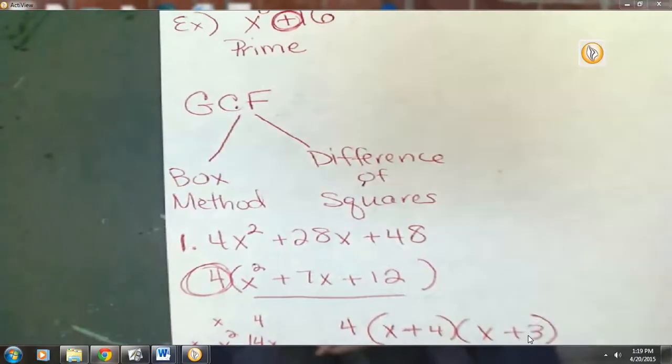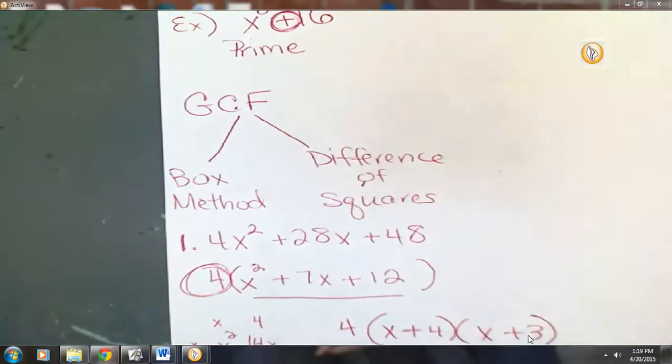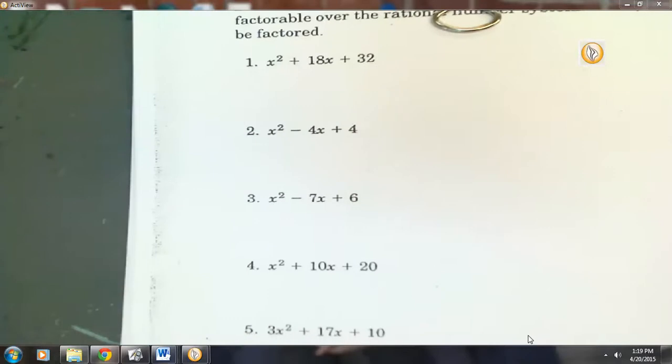Go back to the other side, if you would. Looking at now the page with two columns, the left-hand column. These problems here on the left-hand side all pretty well have three terms, don't they? What factoring method do we generally do with three terms? Box. Box method. Now there is at least one problem on that left-hand column that you're going to have to do greatest common factor first. What problem am I looking at? 6. Number 6. Number 6, you're going to need to do greatest common factor first, and then you should be able to set up your box.